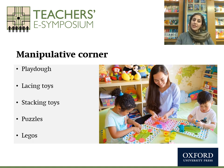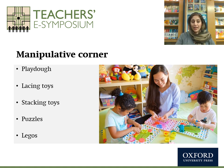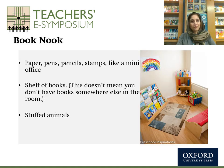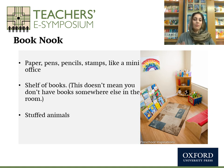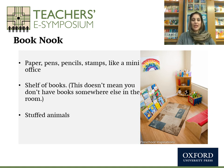The manipulative corner is used for activities that help develop fine motor skills, such as puzzles, Legos, Play-Doh, lacing toys, and stacking toys. You can have soft toys as well because children can use their senses to touch different textures and feel them. For the book nook, you can have paper, pens, pencils, stamps — like a mini office — and a shelf of books. Through this, you can also teach kids how to look after their books. Stuffed animals representing characters from stories allow children to enact them.